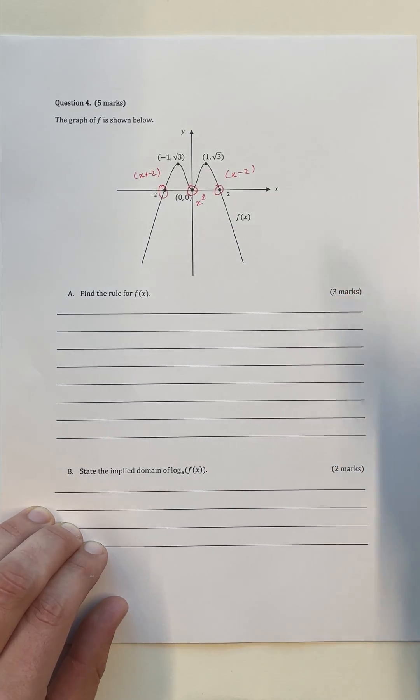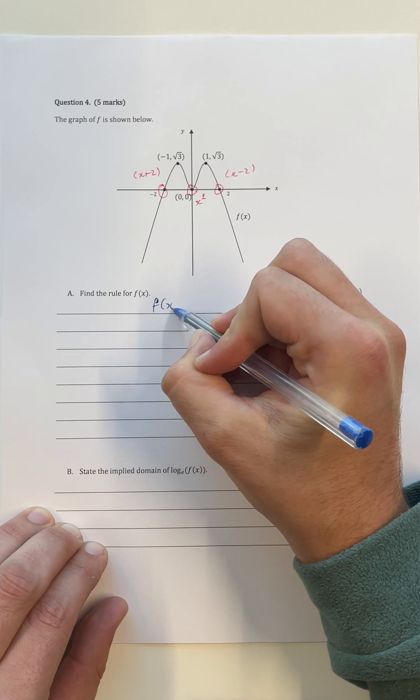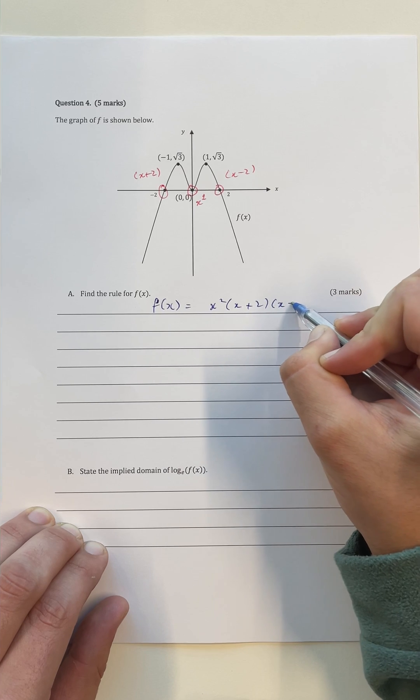Therefore, we can build up the skeleton of the rule of f of x with this information here. What we can say is that f of x is equal to x squared outside of x plus 2 outside of x minus 2.